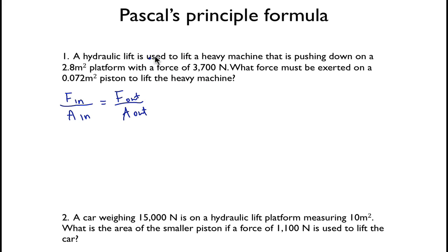So if this hydraulic lift is used to lift a heavy machine, pushing down on it, so this would be the output side. So 2.8 and 3,700 are on the output side. So we have 3,700 over 2.8. It's going to be equal to, this is our area in, so that would be 0.072 on this side over F in. So now we're just going to cross multiply, so we're going to multiply that times that, and then this one times that one.